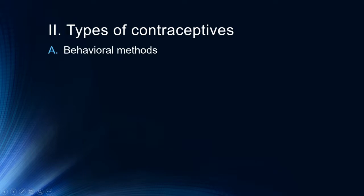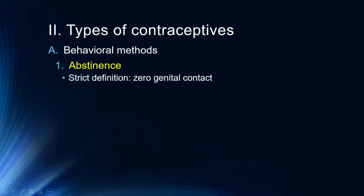We'll talk about different types of contraceptives: behavioral methods, barrier methods, and hormonal methods. We'll start with behavioral methods, certainly some of the least effective. Abstinence — the strictest definition — is no genital contact of any sort.